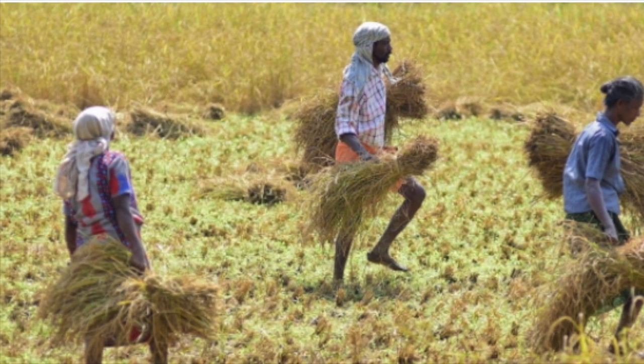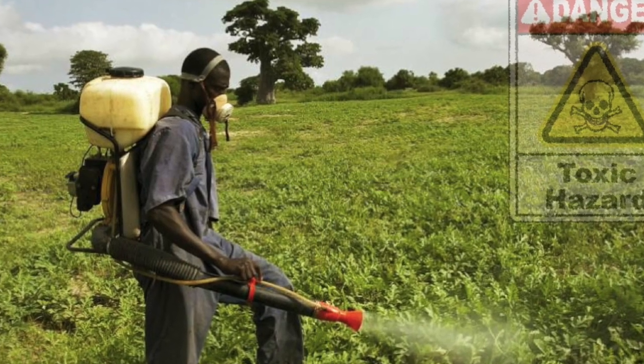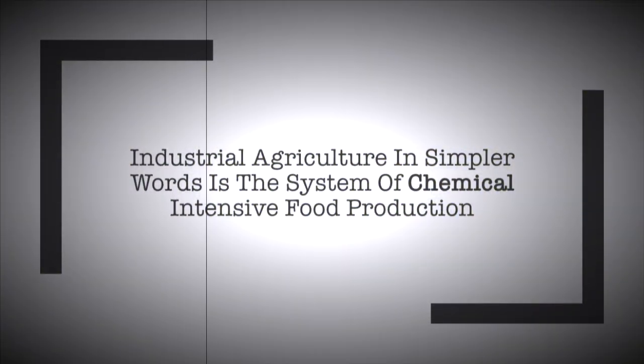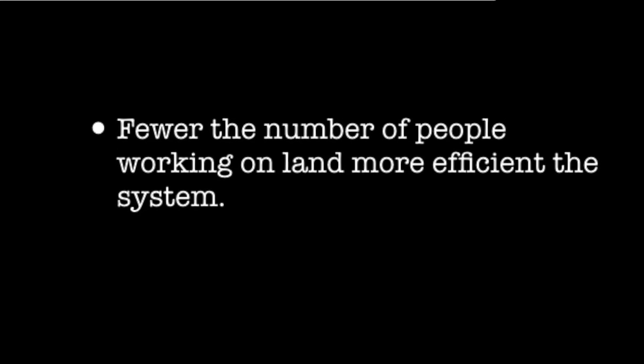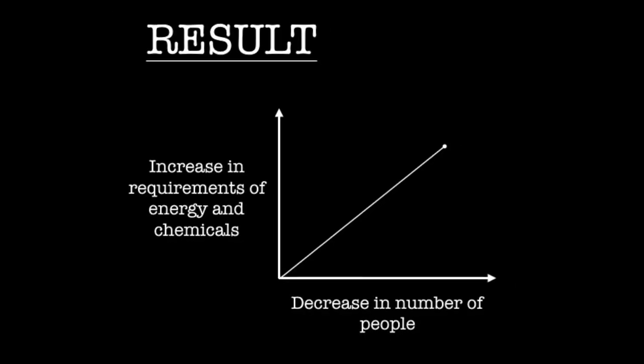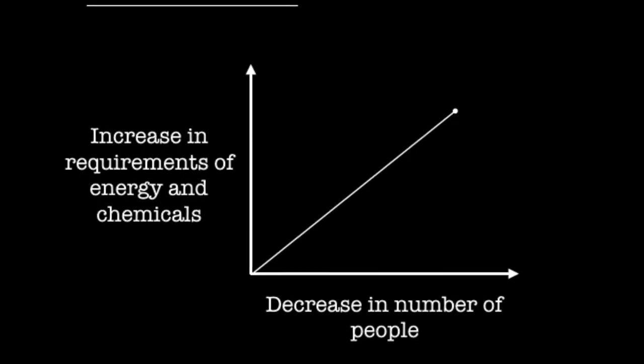The type of agriculture practiced the most is industrial agriculture. Industrial agriculture, in simpler words, is the system of chemical-intensive food production. It's harmful for both the health of the workers and consumers. In the industrial model of agriculture, efficiency is measured by the least number of people working on the land. Globalized industrialized agriculture is based on fossil fuels — it uses fossil fuels to produce fertilizers, run machines, do the processing, and transport food thousands of miles away.